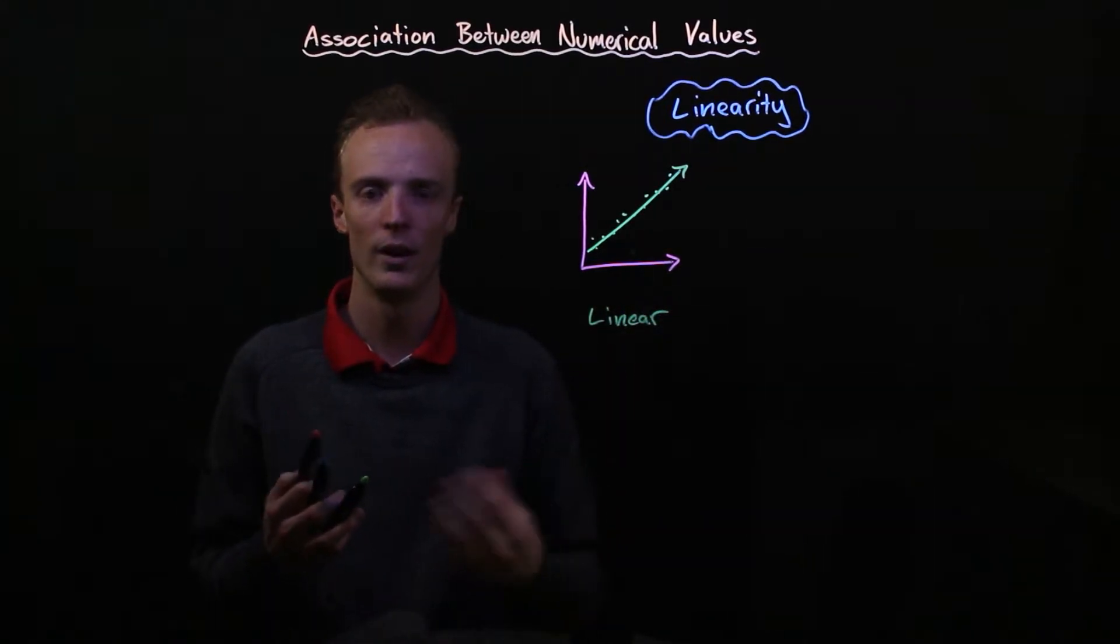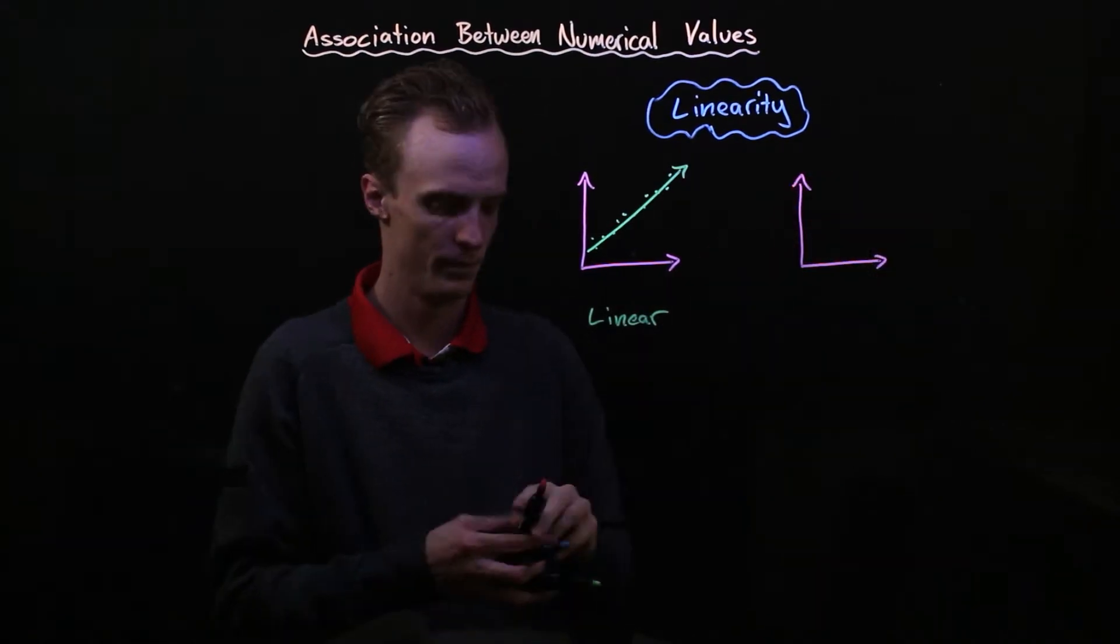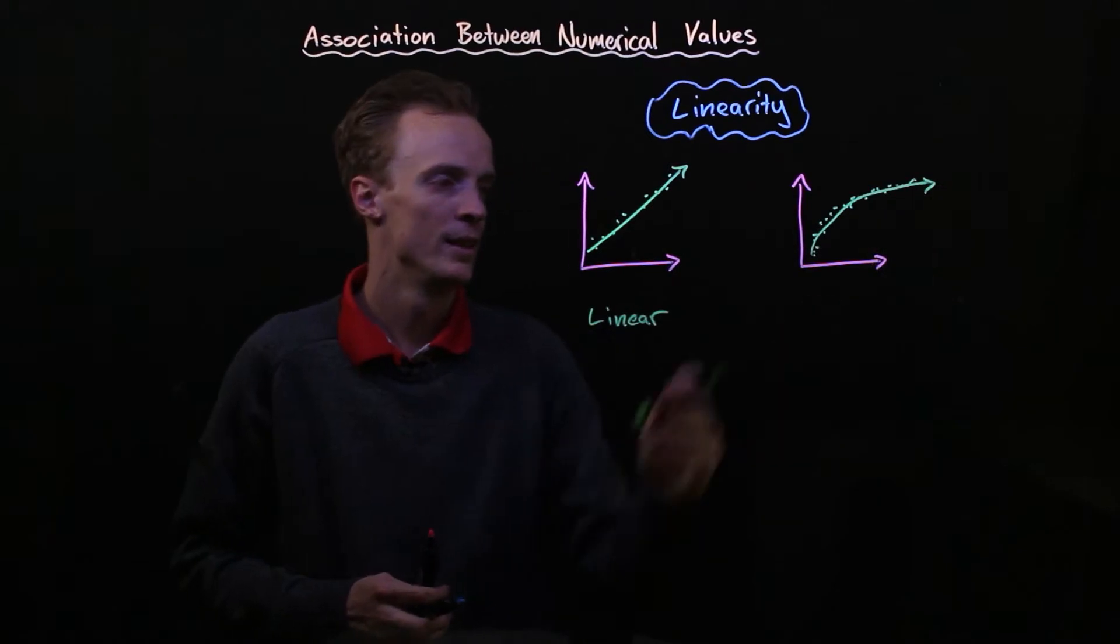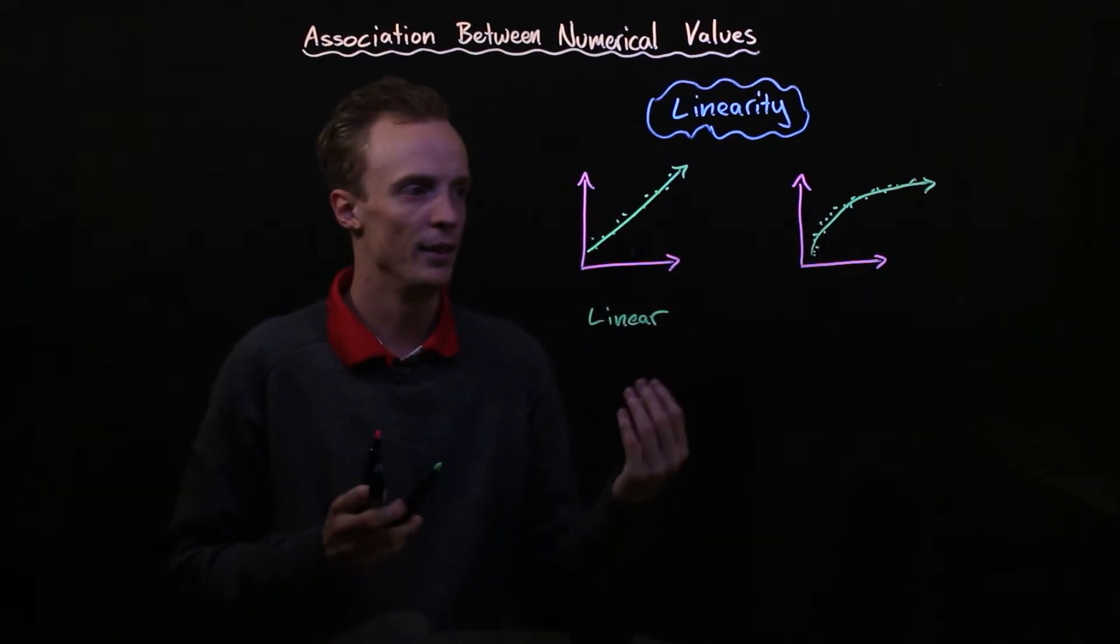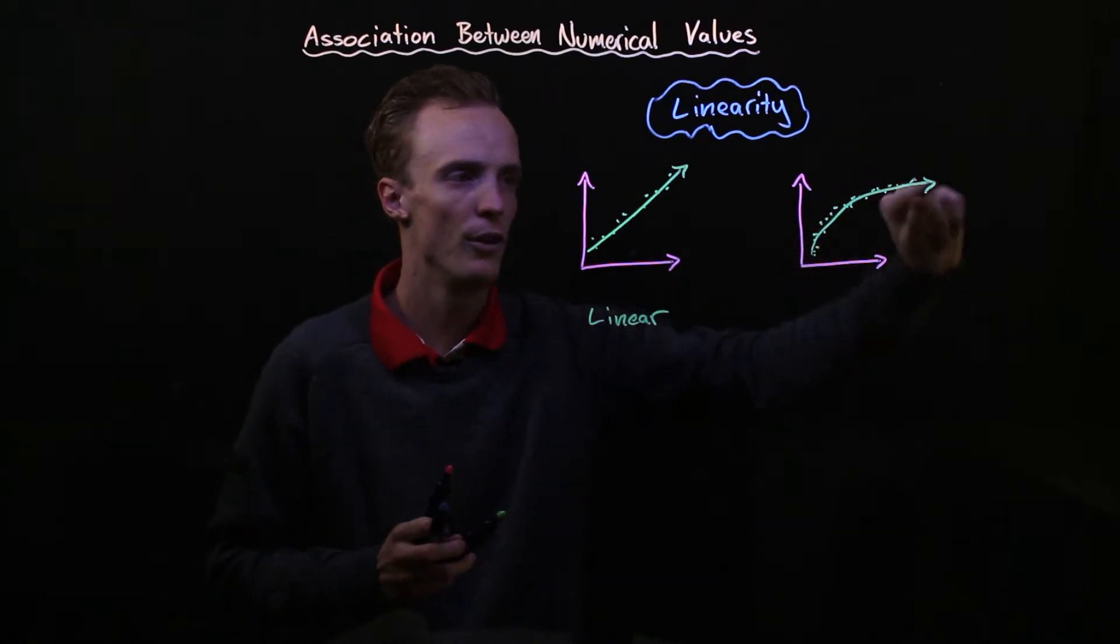This is different to when it's not linear. An example might look something like this. As you can see this doesn't really follow that straight line anymore, there's sort of a curve in the arc.